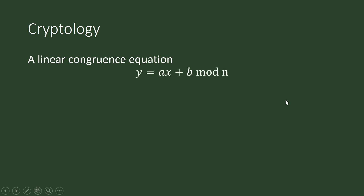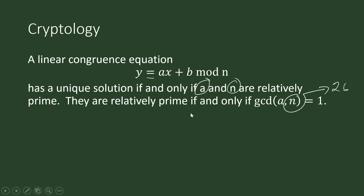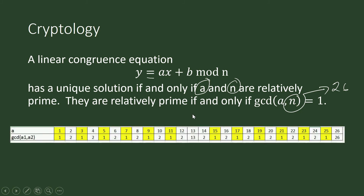In a linear congruence equation, A and N must be relatively prime — meaning their greatest common divisor is 1. Here, N is 26. So you will choose from among the integers less than 26, which of them are relatively prime to 26. These are integers such as 1, 3, 5, 7, 9, 11, and so on up to 25.